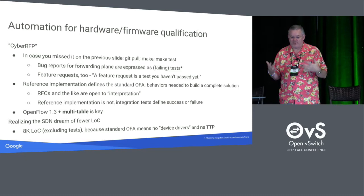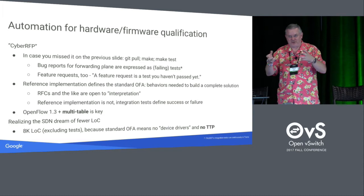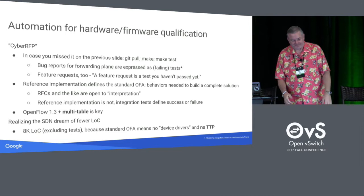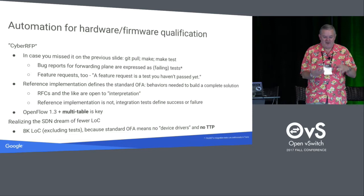OpenFlow 1.3 multi-table is key to this. That's how we create tables. Those tables are linked to each other through go-to's as an action — they're matches and actions. This is how we automate the process of both reporting bugs and requesting features.